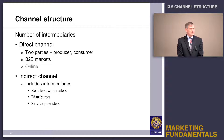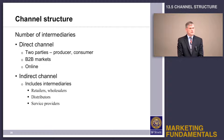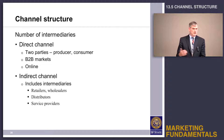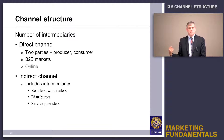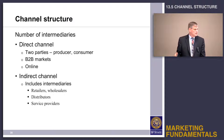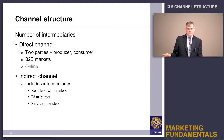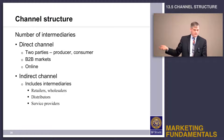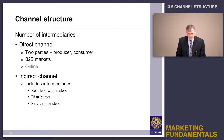We see direct channels a lot in the B2B, business-to-business market space, because business customers tend to have larger sales volumes, so it would make sense to buy directly from the factory. When Ford is ordering tires, they don't need to go through a distributor — they can just talk to Firestone and say send us the tires that we need.